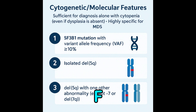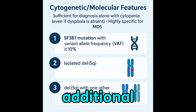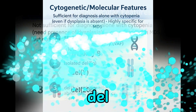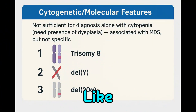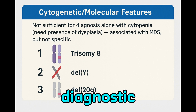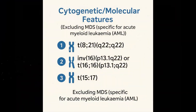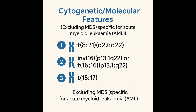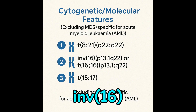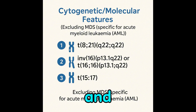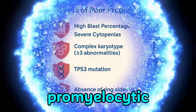MDS-defining mutations include SF3B1 mutation with VAF over 10%, isolated DEL5Q or DEL5Q with one additional abnormality except minus 7 or DEL7Q. Some changes like trisomy 8, DELY, and DEL20Q are associated with MDS but not diagnostic without dysplasia. Certain chromosomal rearrangements indicate AML and exclude MDS — these include t(8;21), inv(16), and t(15;17), which defines acute promyelocytic leukemia.